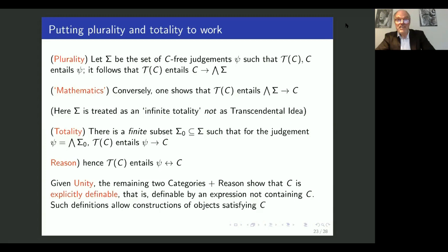And here's the point where you need to treat infinity not as a transcendental idea, but as an infinite totality. Once you do this, you get rewarded because there is a version of totality is applicable. If the infinite set entails C, then there is a finite subset that also entails C. The bad news is that you cannot prove this without the detail via the infinite set. In any case, what you get here is that in the end, the theory entails that C is equivalent to a conjunction of statements which do not contain C, so it provides an explicit definition.